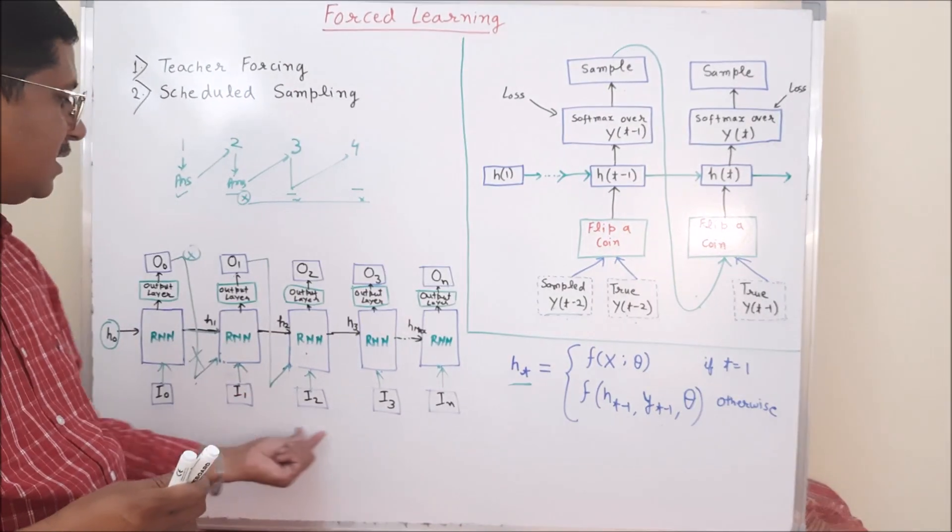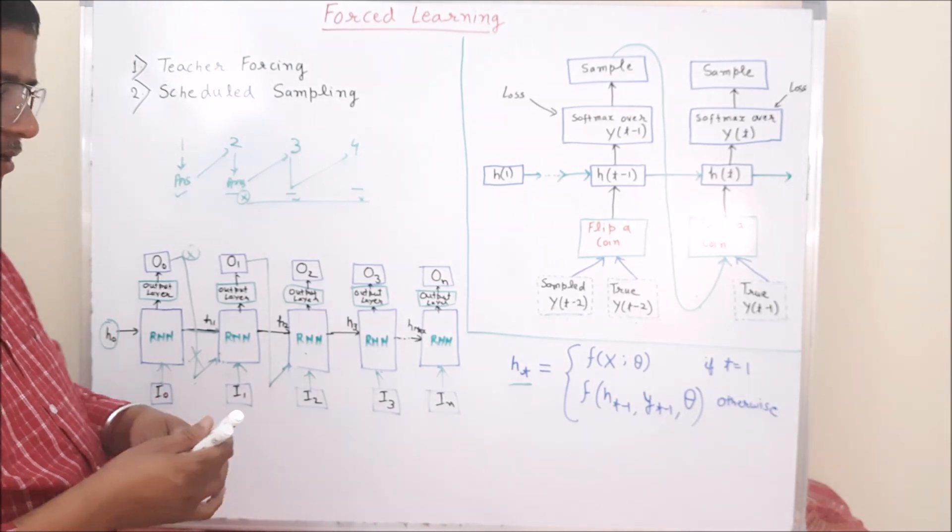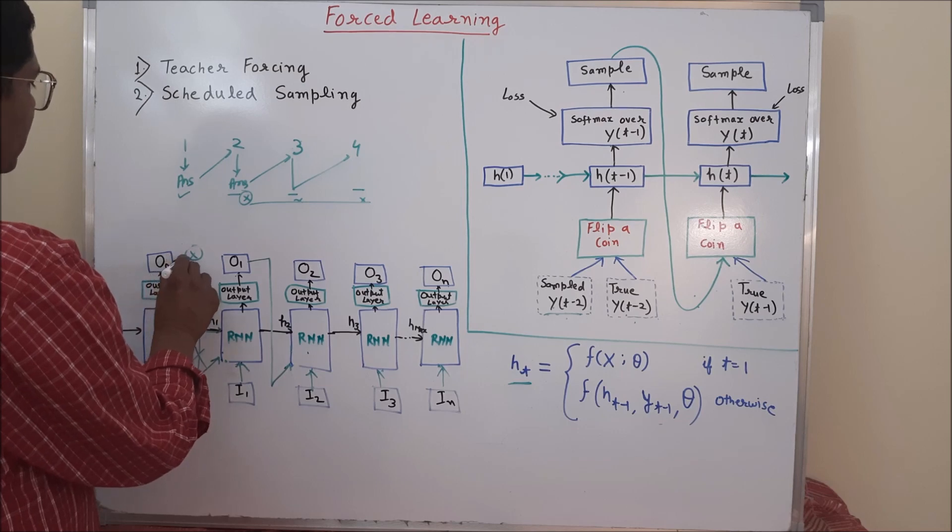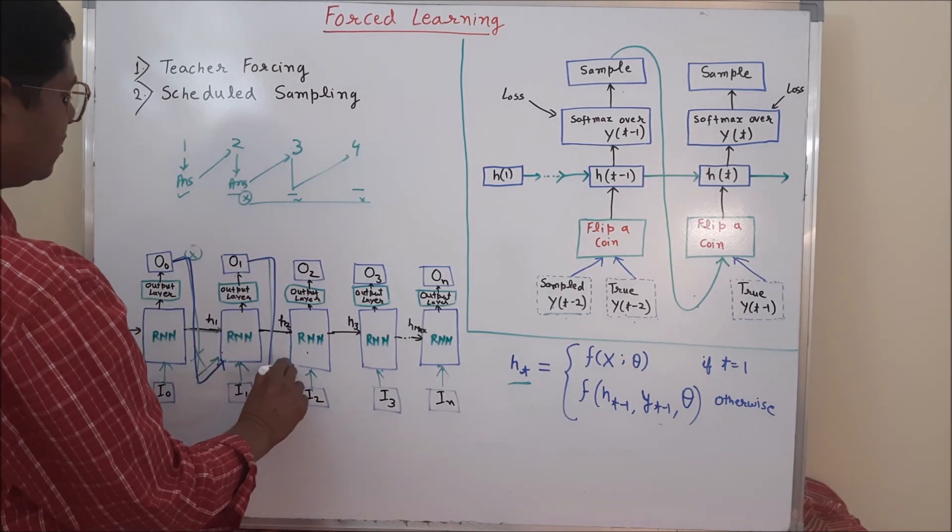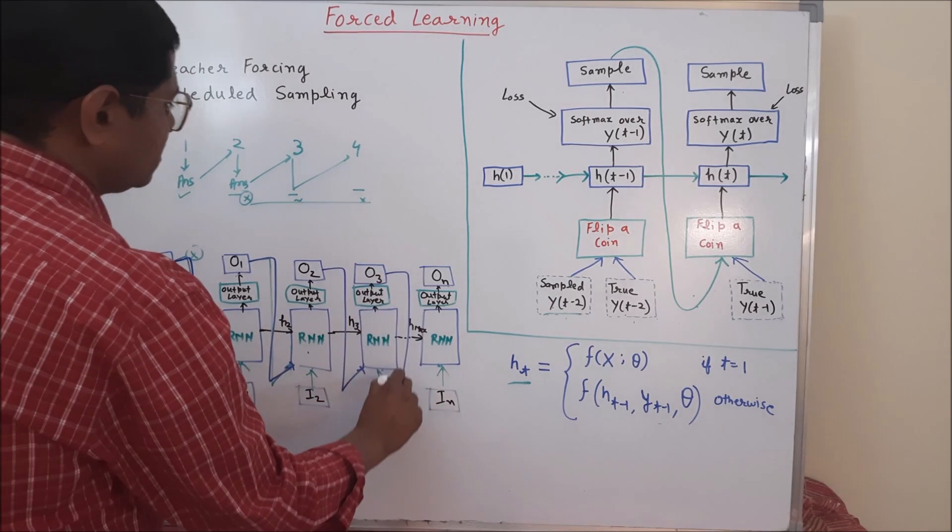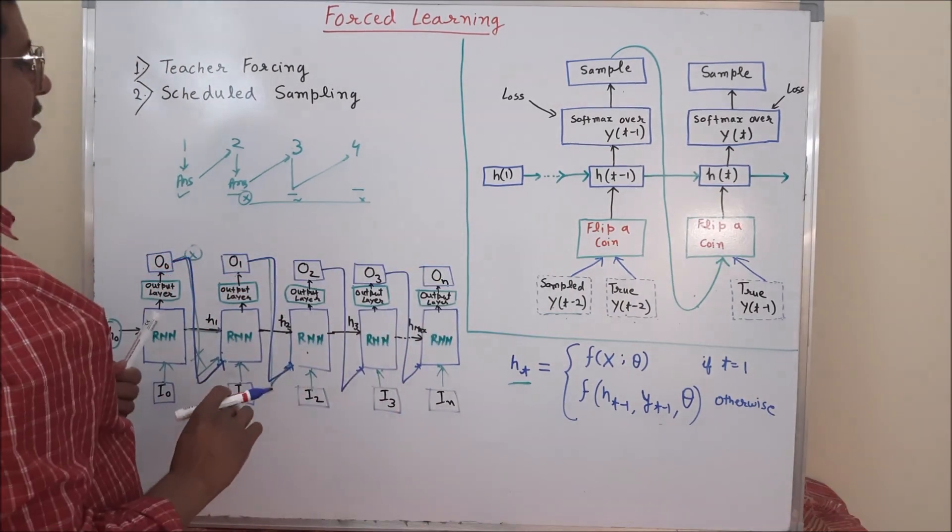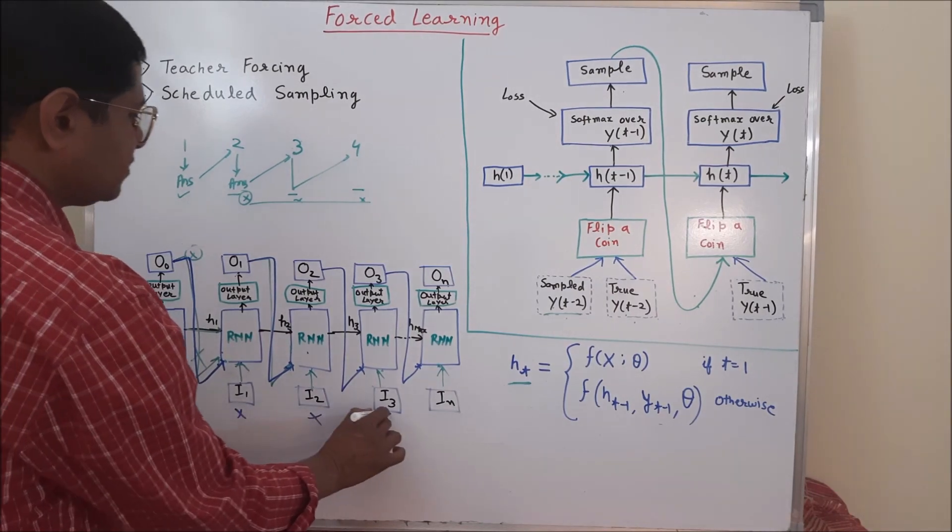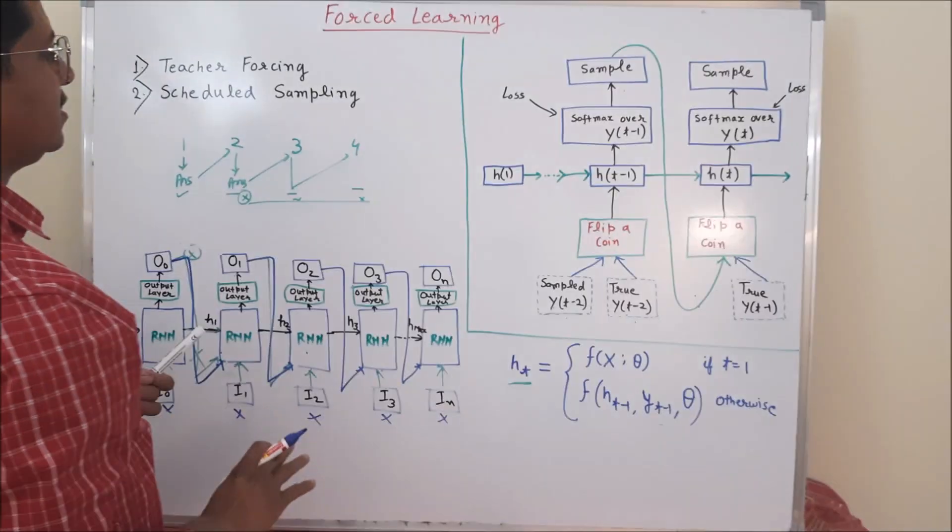So, in that case, we don't have that kind of teacher forcing input. So, if we don't have teacher forcing input, then what we will do? We will use the previous output as input to the next level in the test process. Training process is fine, but in the test process we will use this. And as we don't have this in the test process, so it will totally destroy the system. Several times it will totally destroy the system.